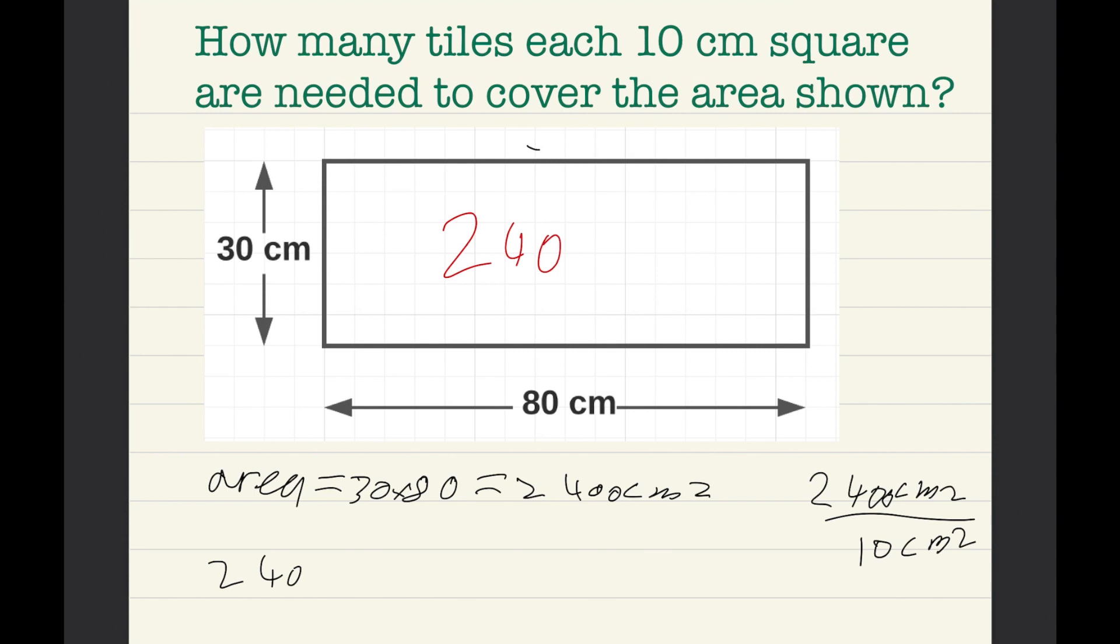So now I'm going to summarize the whole question. How many tiles each 10cm square are needed to cover this area shown? 240 tiles are needed to cover the whole area of 2400cm squared.